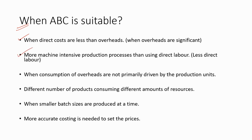More machine-intensive production processes than using direct labor — less direct labor is used. When consumption of overheads is not primarily driven by production units. Under absorption costing, we use the number of production units as the primary base value of the activity level. When the activity level is not primarily driven by production units, we can use activity-based costing. Different products consuming different amounts of resources, when there are more than one product. When smaller batch sizes are produced at a time, more accurate costing is needed to set prices. These are the instances where ABC will be more useful.